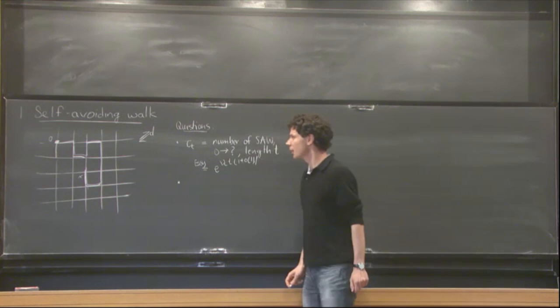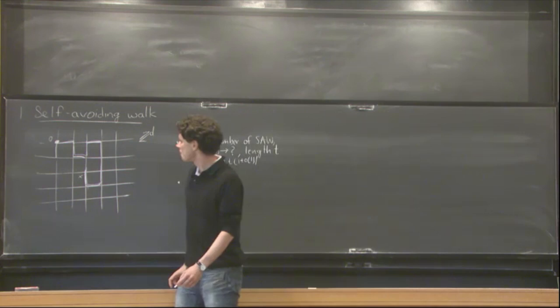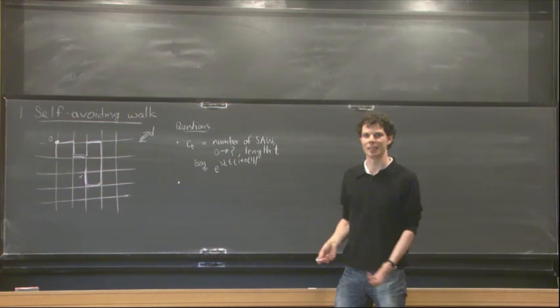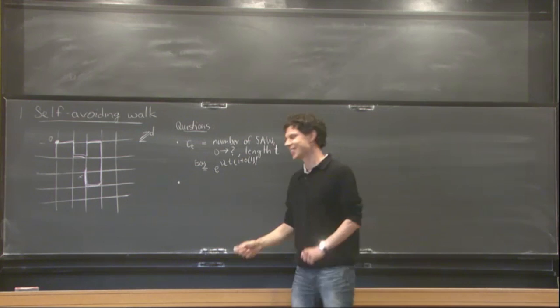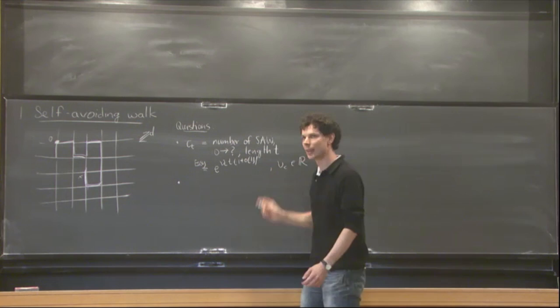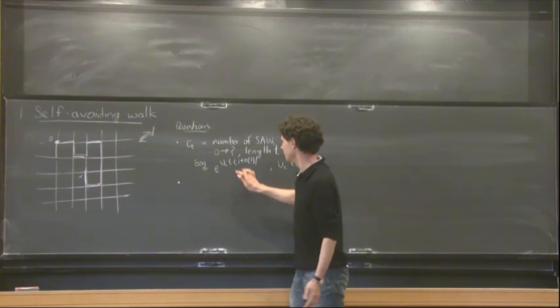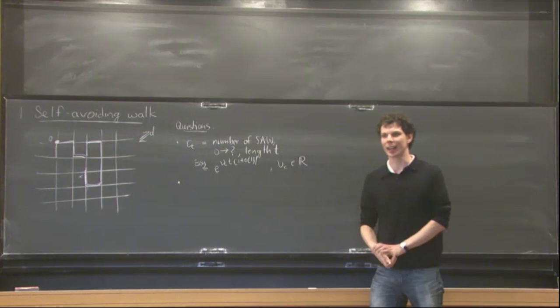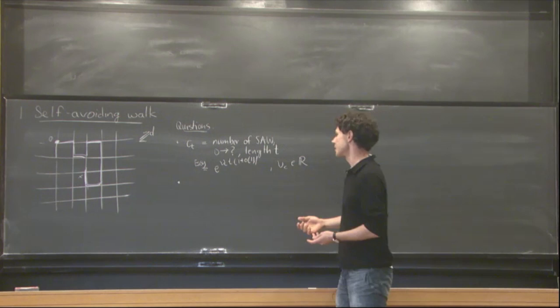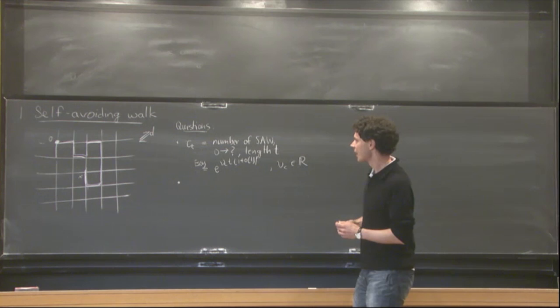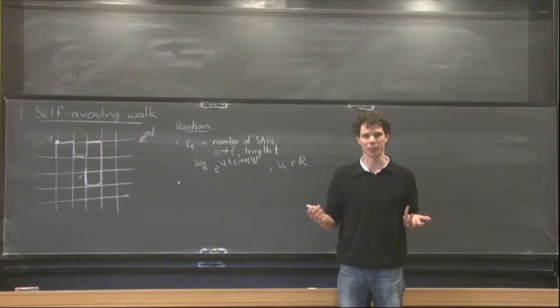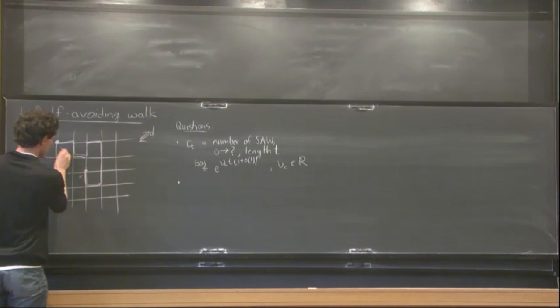From the point of view of probability theory, you may ask, what happens if you take a uniformly chosen self-avoiding walk of a given length with a given starting point, how far, on average, is it going to be away from the point you started at? So what is this distance?